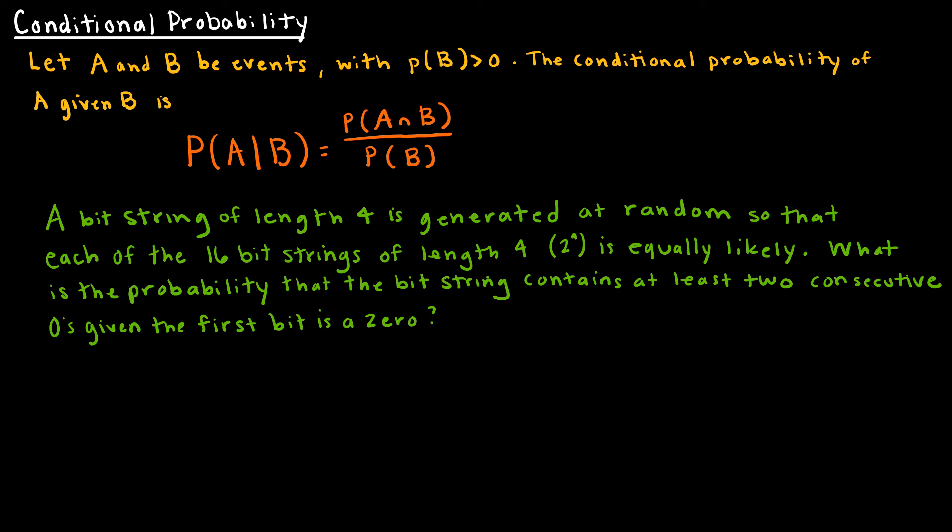Let's talk a little bit more about conditional probabilities. We didn't really formalize it in our last video. To formalize the definition, let A and B be events with probability of B greater than 0. The conditional probability of A given B is P(A∩B) / P(B). We're limiting our population down to just when B has already occurred.